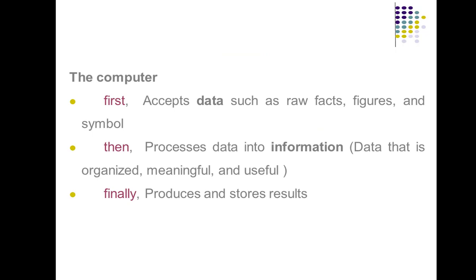The computer first accepts data — data such as raw facts, figures, and symbols. Then it processes the data into information. Information is data that is organized, meaningful, and useful. And then finally it produces and stores the results.